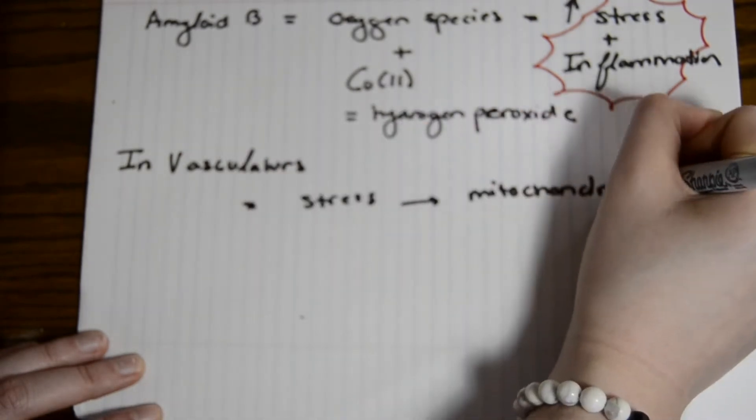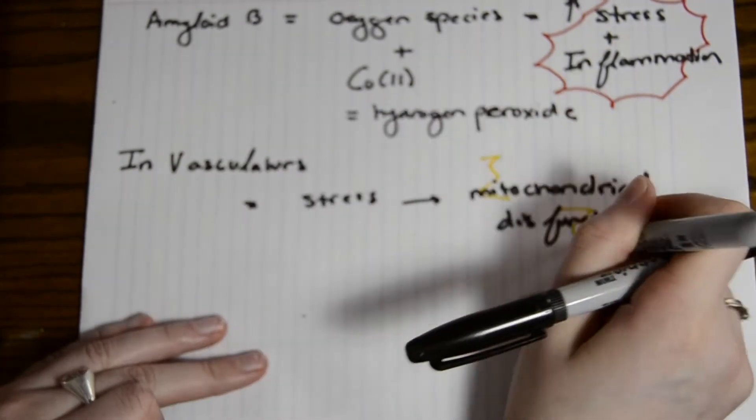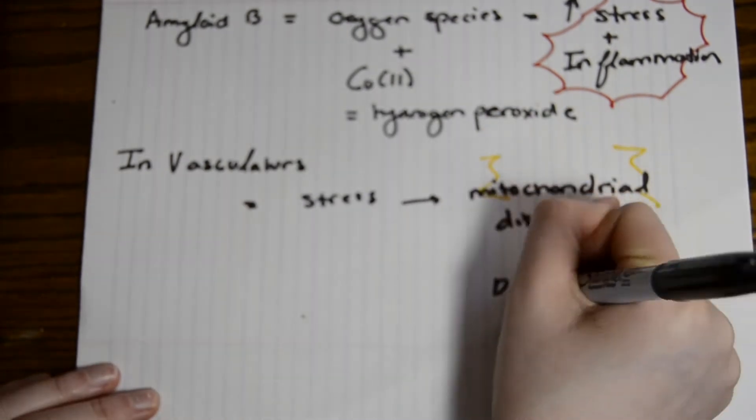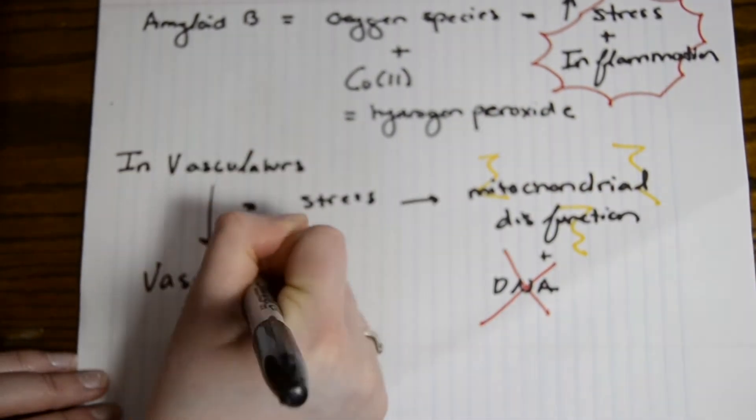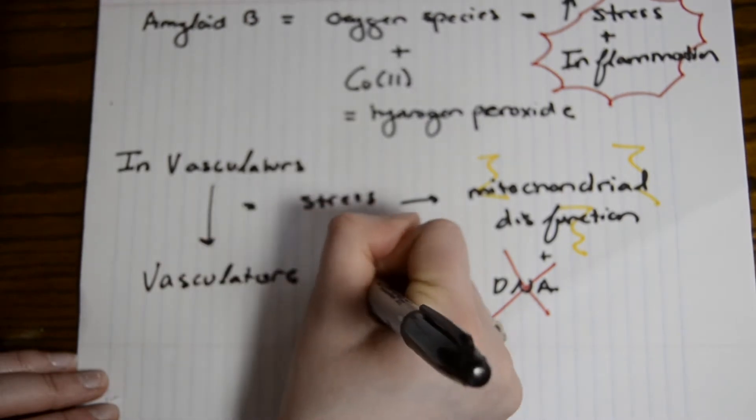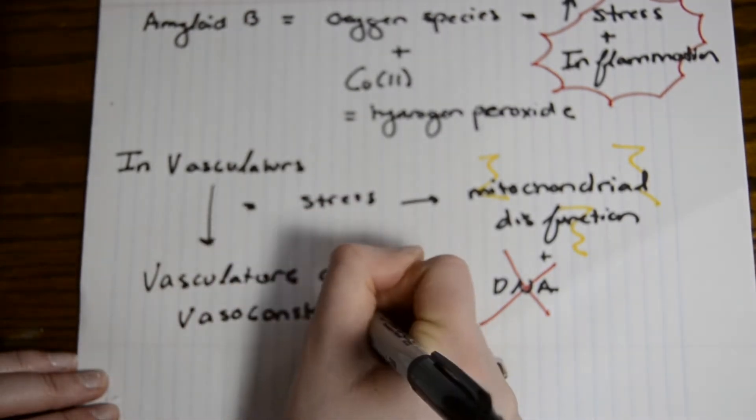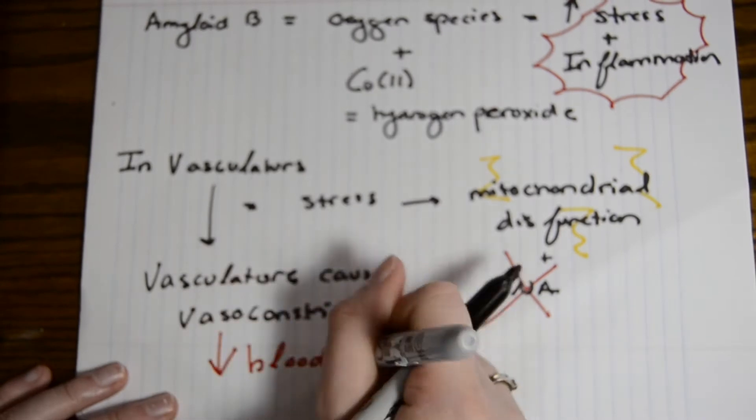In the sense of vasculature, it causes stress, which also leads to mitochondrial dysfunction. This also injures DNA, which causes vascular constriction, which means there is an overall decrease of blood to the brain.